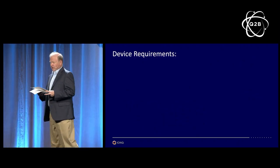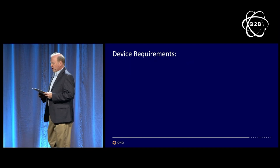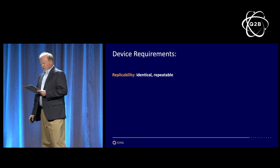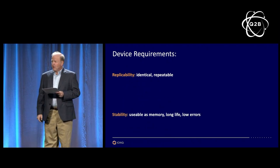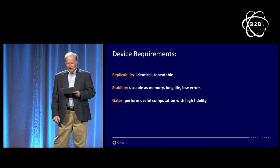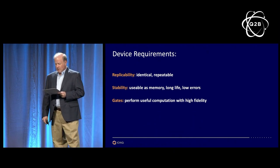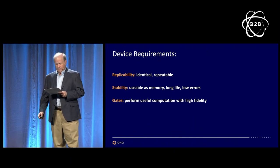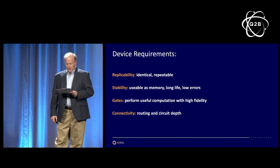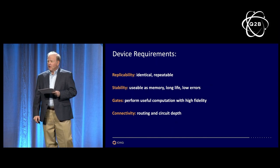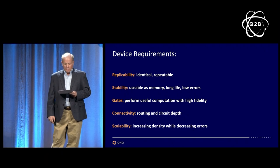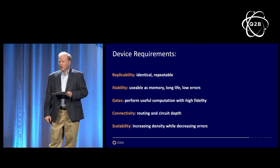So what do you want in terms of your device? What should you look for in your quantum computer? You need identical qubits, stable qubits with low errors. For n qubits, you need n-squared gates with high fidelity. With low qubit counts, you need lots of connectivity between the qubits. Best if every qubit can talk to every other qubit and all qubits at the same time. And as the system scales up, the error rate should go down.